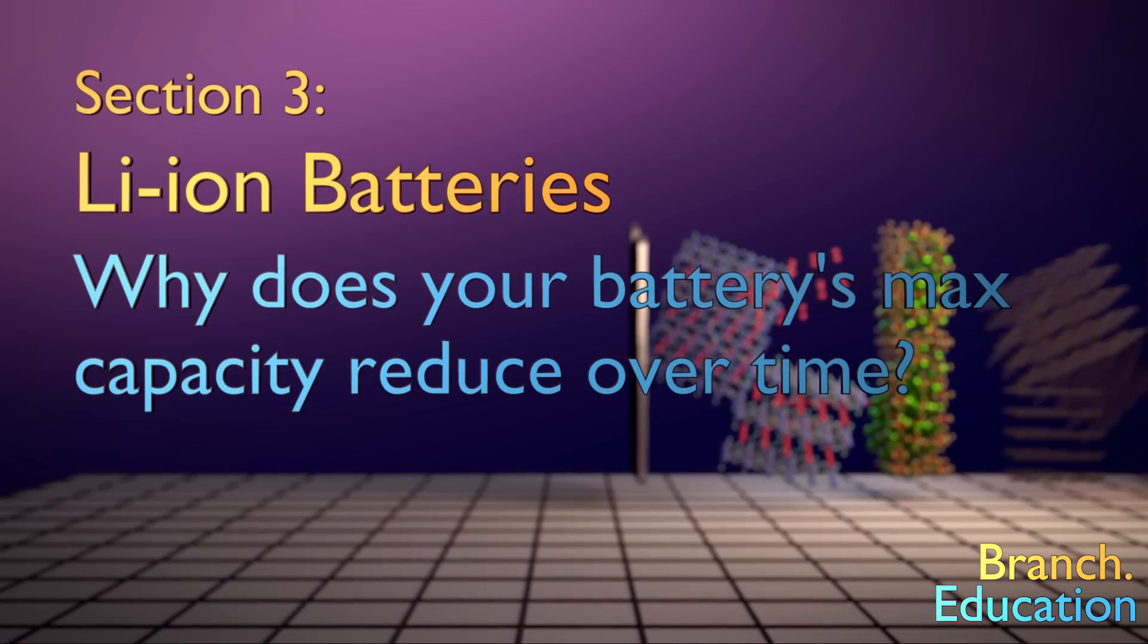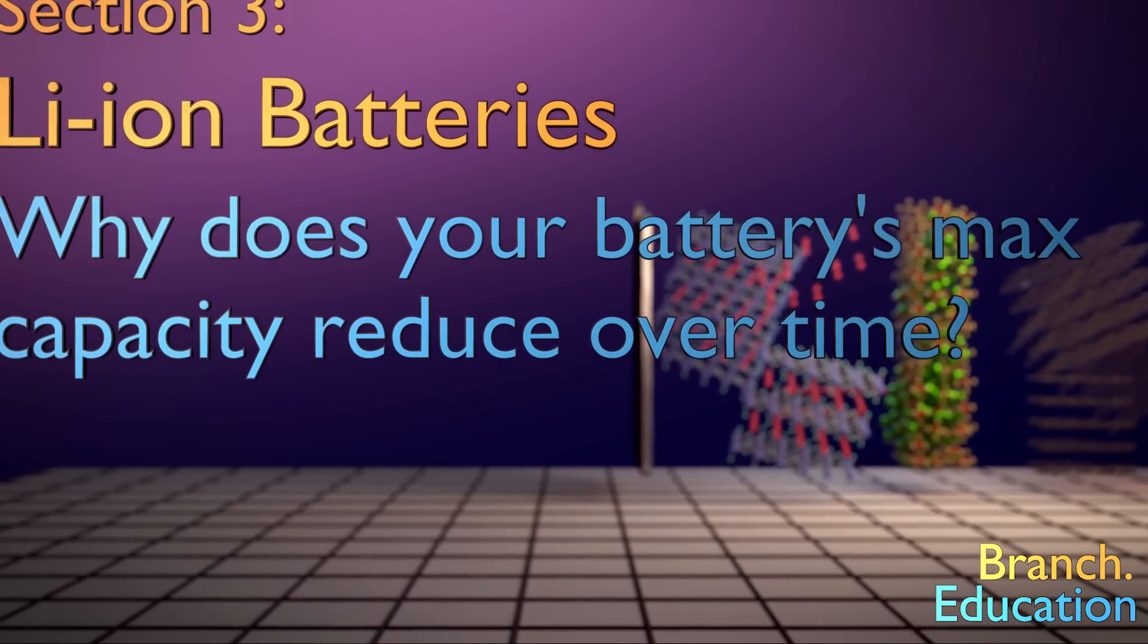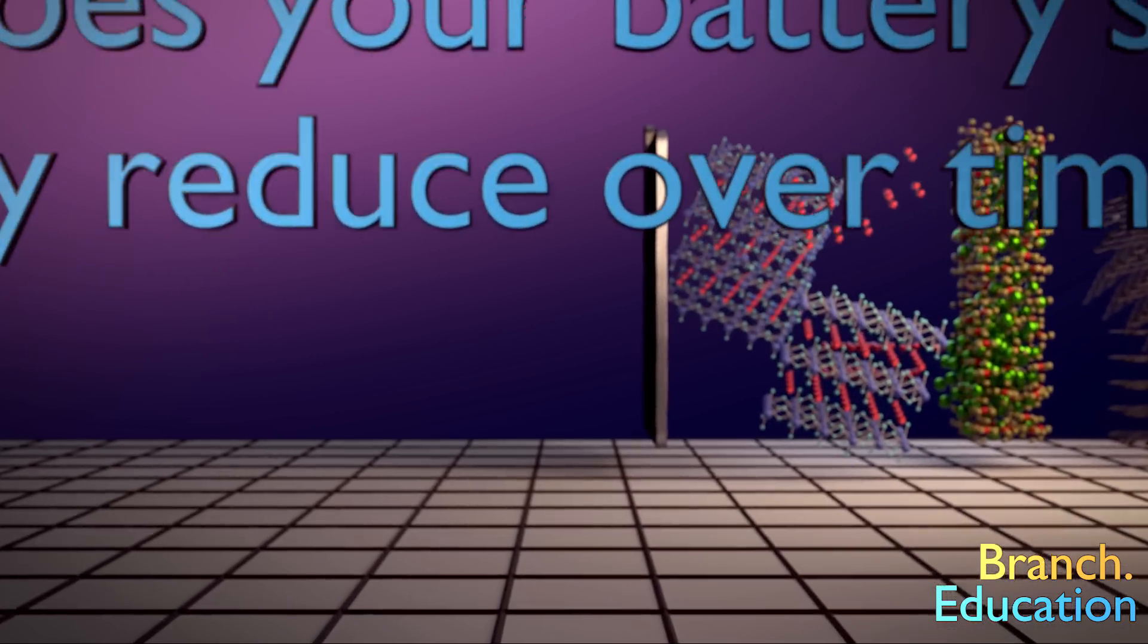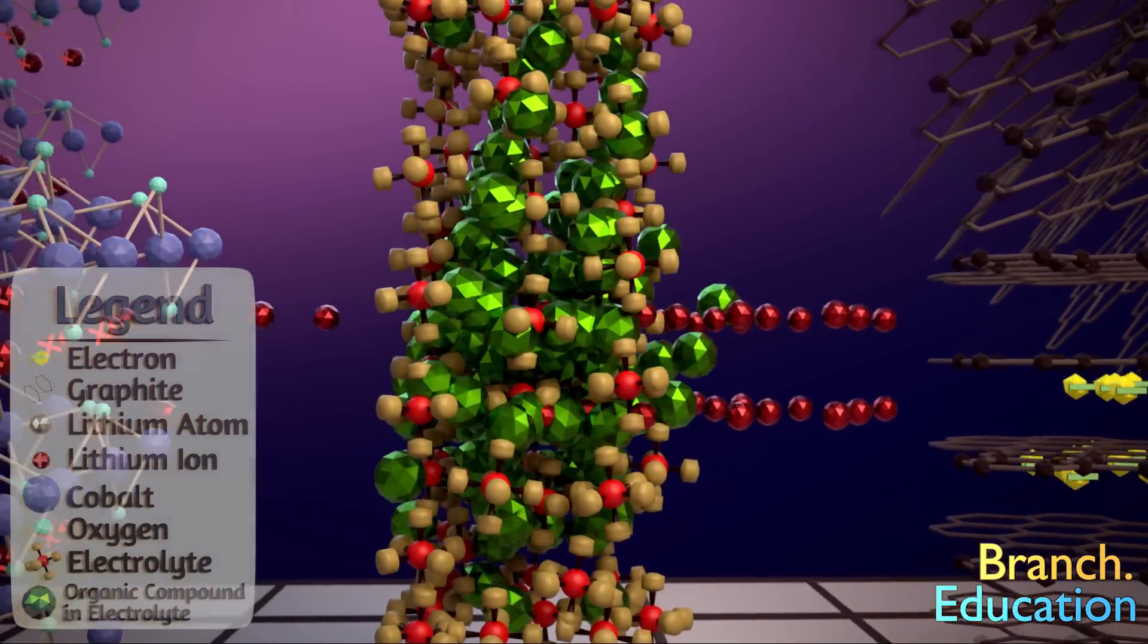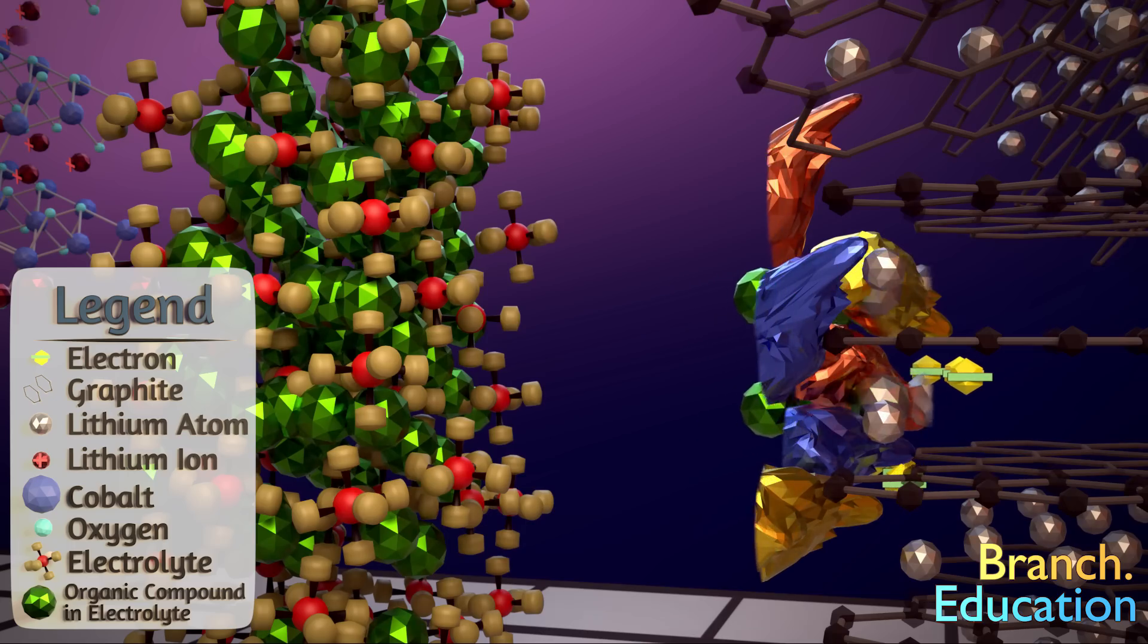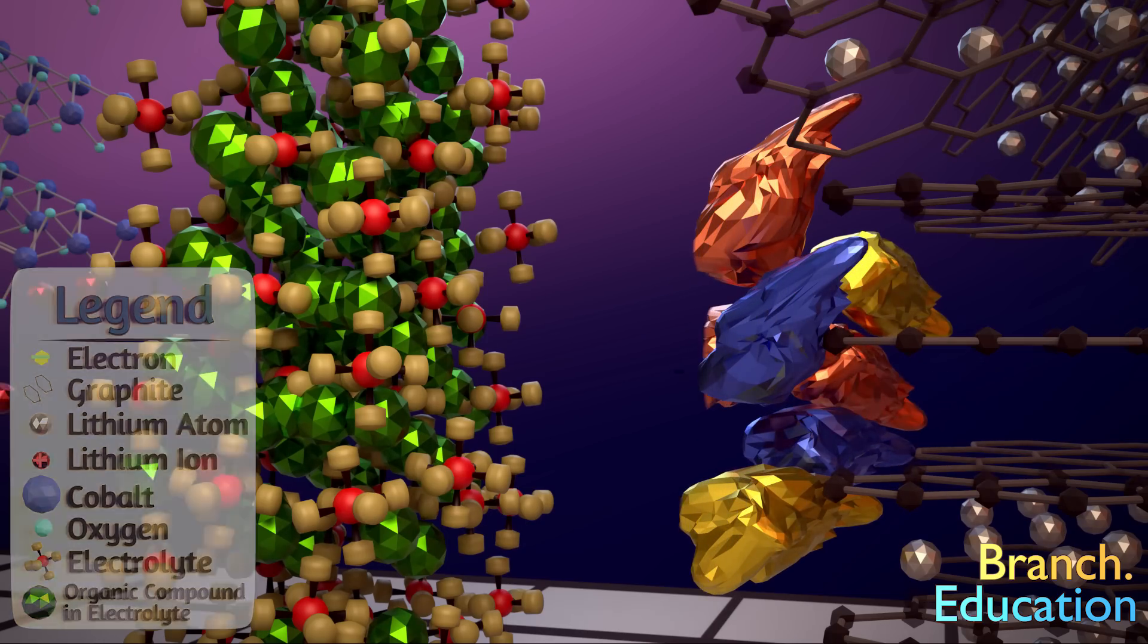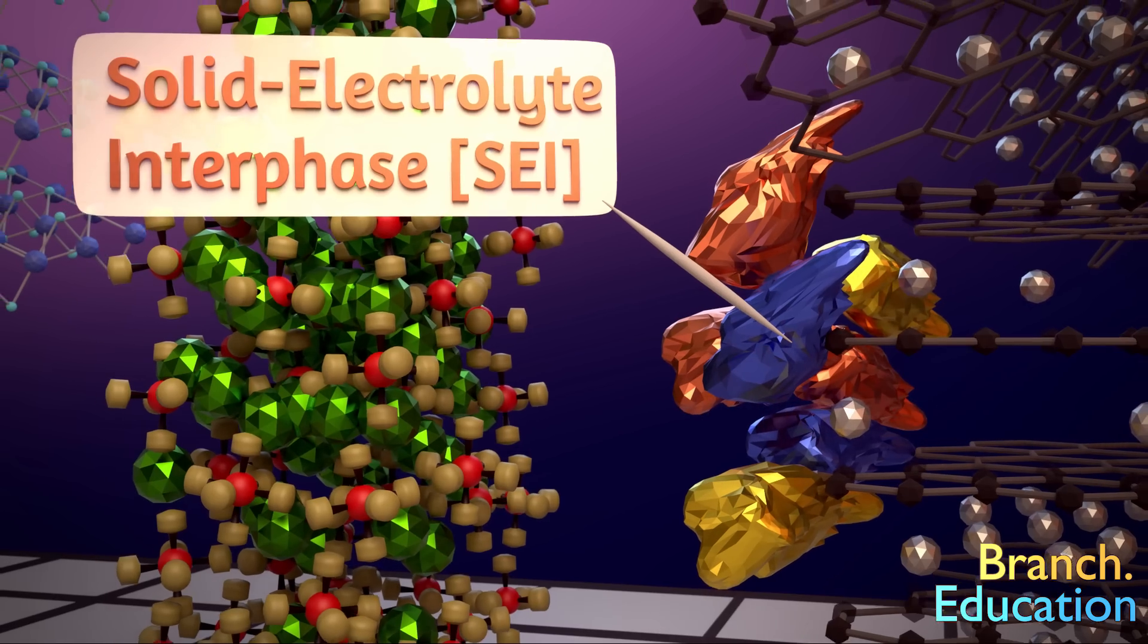So then the final topic. Why does your battery's max capacity reduce over time? There are several reasons. One of which is that sometimes lithium and the incoming electron react with the electrolyte and organic solvent to form compounds that are called solid electrolyte interphase or SEI. SEIs irreversibly consume lithium and the electrolyte, thus reducing the overall quantity of lithium and thereby reducing the max capacity of your battery.